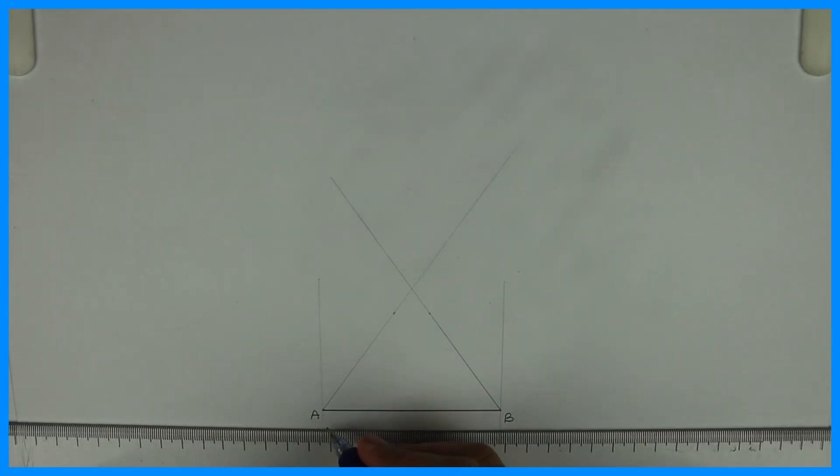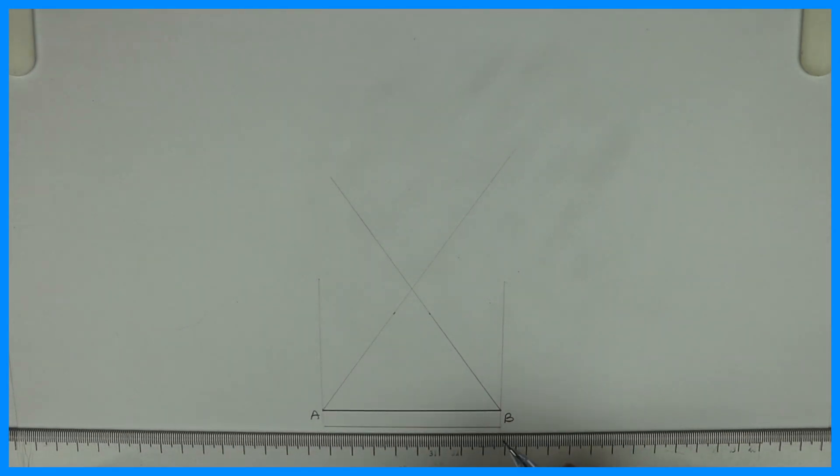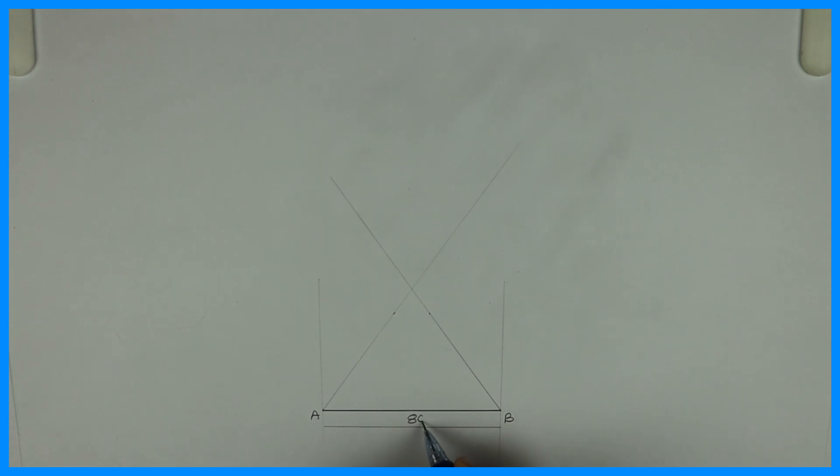So wherever they meet, from that point, this is A, this is B. From A and B we'll take 54, 54. This is 80. When you take 54 degrees from A and B, you'll get point O.